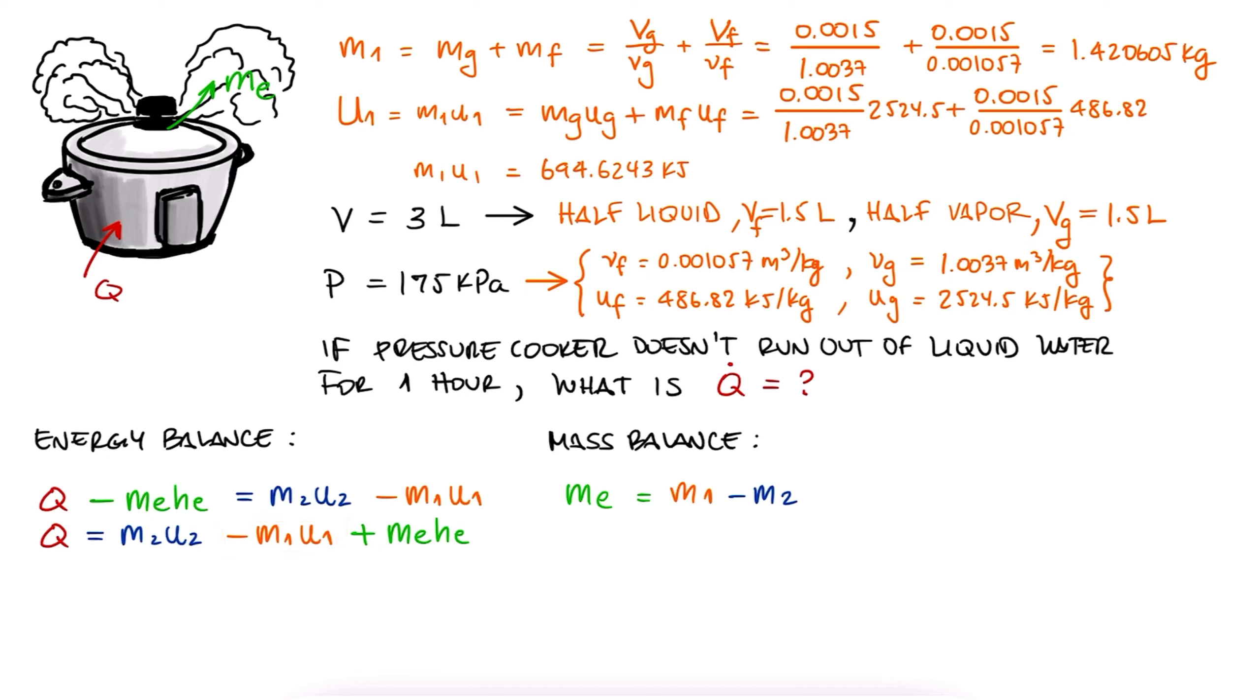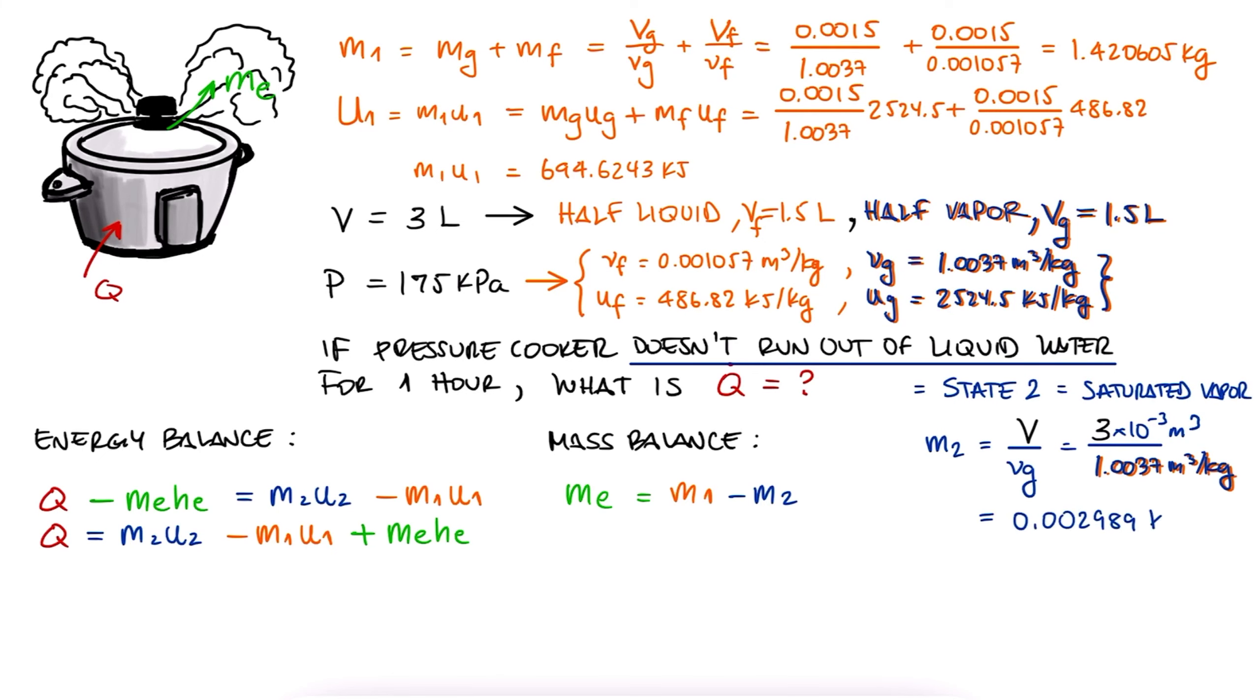Now, for M2, since we're trying to find the heat for it to not run out of liquid water, we go to the limit where it just barely does. This means that M2 is all saturated vapor. M2 would be V over Vg. From the mass conservation, we can now calculate M1 minus M2.